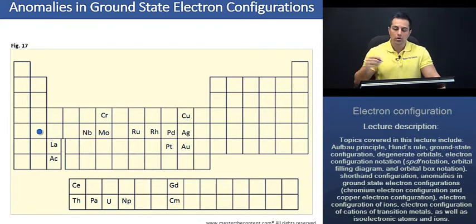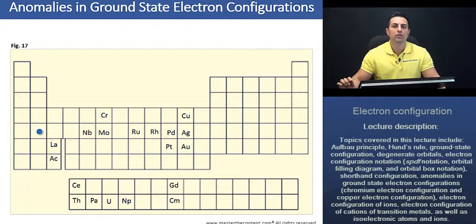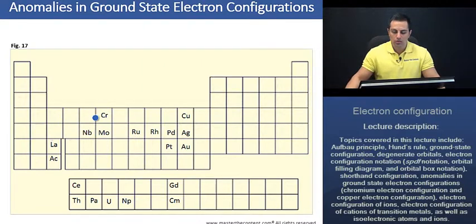Furthermore, anomalous electron configurations have unusual stability with half-filled orbitals and fully-filled orbitals. Let's explore that statement now using chromium and copper on the next slide.